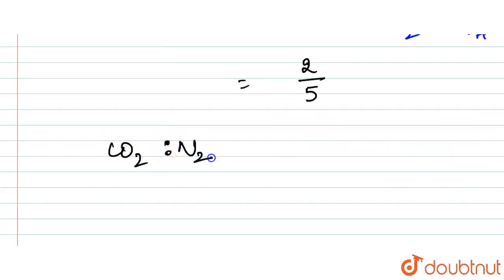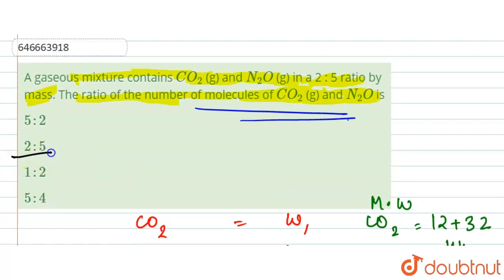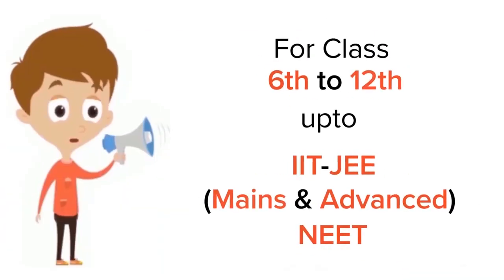It means that the ratio for the molecules for CO2 to N2O is also 2:5. So here our answer is option number 2. Thank you.